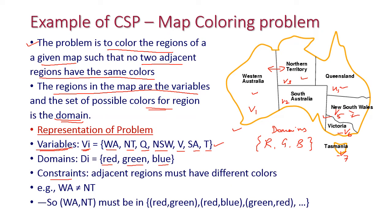The constraint is that adjacent regions must have different colors. While assigning values to all variables, we need to satisfy this constraint. For example, we should not assign the same color to Western Australia and Northern Territory — these two must be different. There are many possible combinations; for instance, if Western Australia is red, its neighbors could be blue or green, and so on. There are multiple solutions, but each assignment must satisfy the constraint.